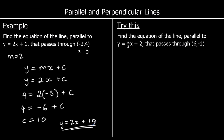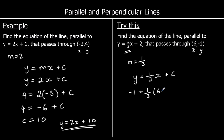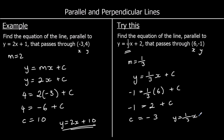Find the equation of a line parallel to y equals one third x plus two that passes through six, negative one. It's parallel, so the gradient is one third. We have y equals one third x plus c. Substituting the coordinates: negative one equals one third times six plus c. One third of six is two, so negative one equals two plus c. Take away two from both sides: c is negative three. The equation is y equals one third x minus three.